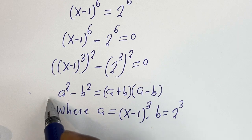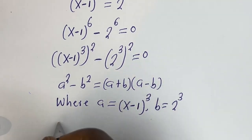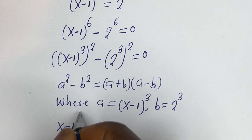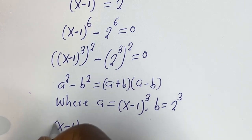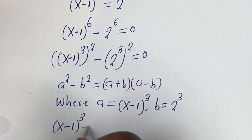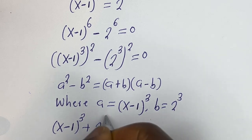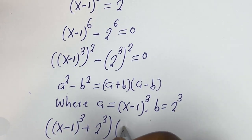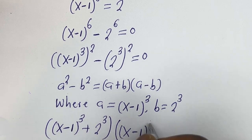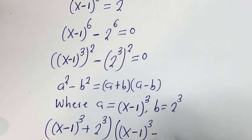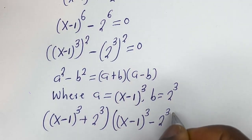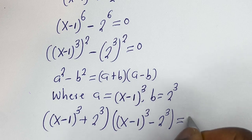Then this can be written as: (x minus 1) to the power of 3 plus 2 to the power of 3, bracket, (x minus 1) to the power of 3 minus 2 to the power of 3, is equal to 0.